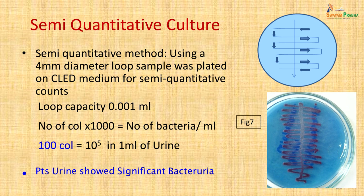Most laboratories use semi-quantitative culture to estimate significant bacteriuria. A 4 mm diameter loop with a capacity of 0.001 ml is used to plate urine on culture medium using a central streak followed by horizontal cross-streaks. The number of colonies is multiplied by 1000 to get bacteria per ml; 100 colonies represents 10⁵ organisms per ml. This patient showed significant bacteriuria with more than 100 colonies on the plate.